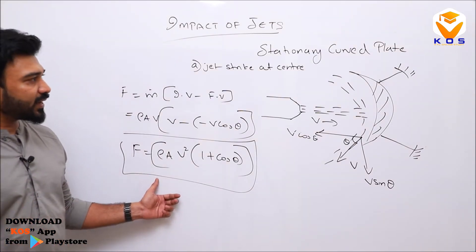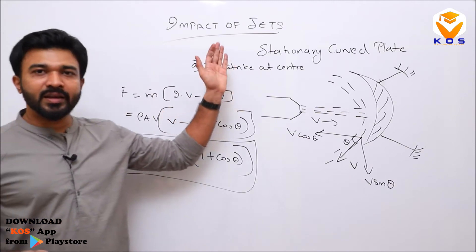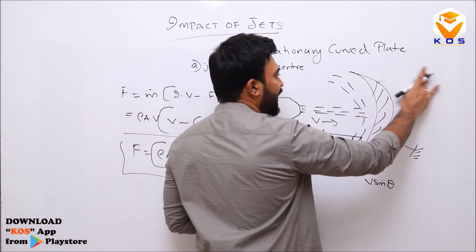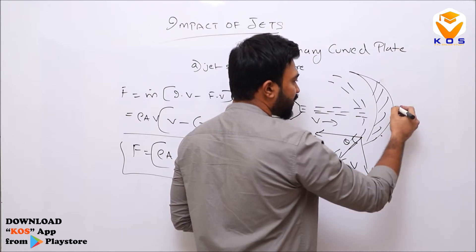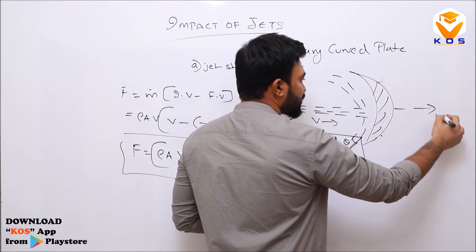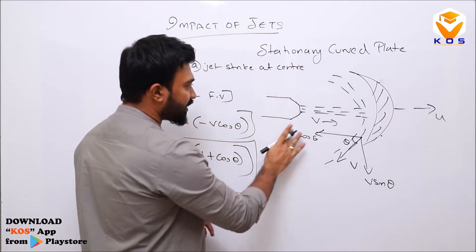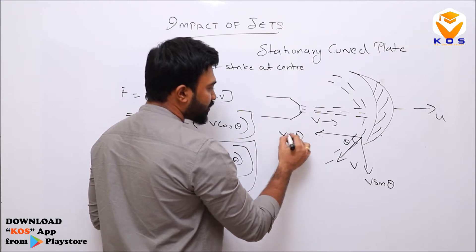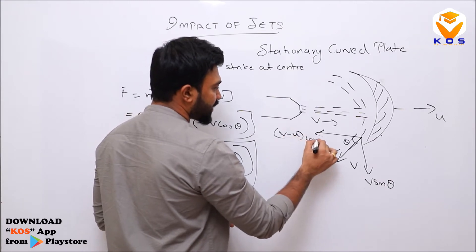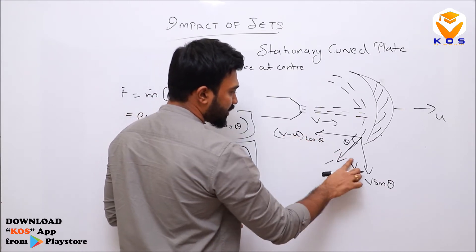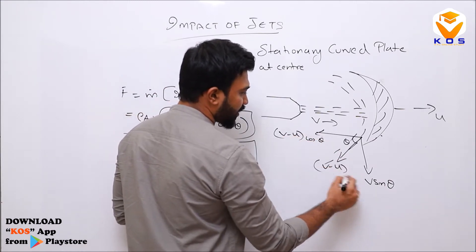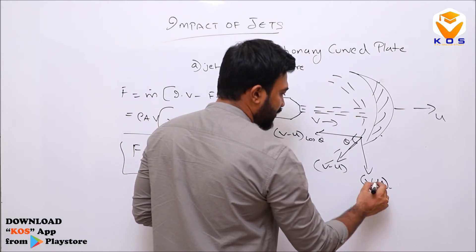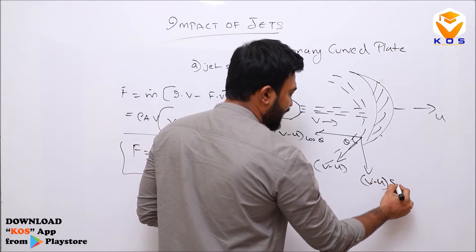Now, if we move the curved blade, what will happen? This blade has a u-velocity movement. By relative velocity, the components become V minus u·cosθ, and V minus u·sinθ.